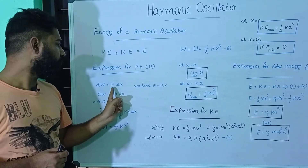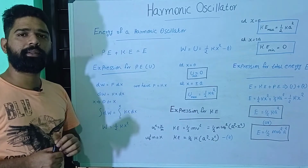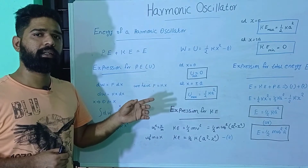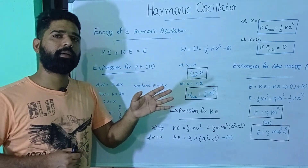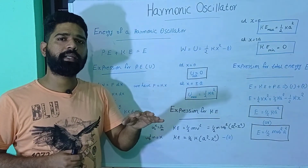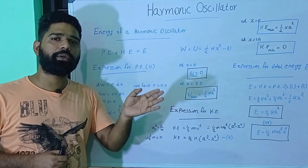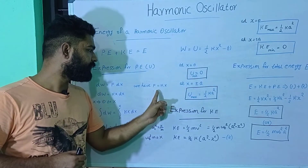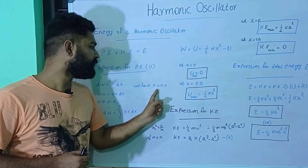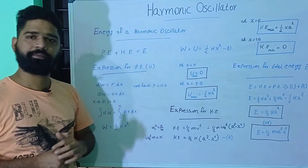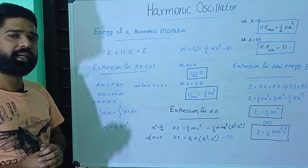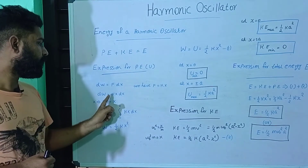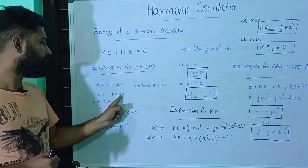Here we are using force. The force is directly proportional to displacement. Then force is equal to a constant into displacement, so F is equal to kx. Then dW is equal to kx into dx.